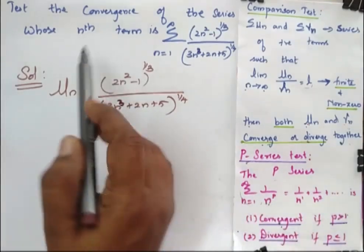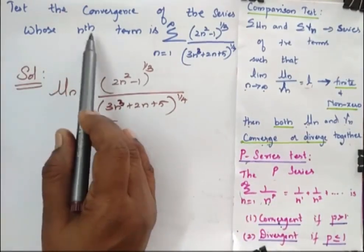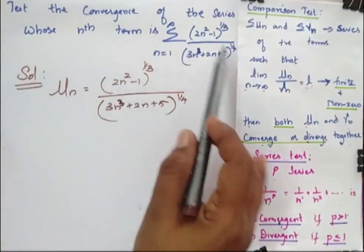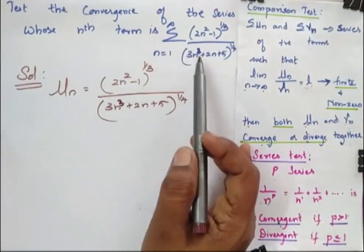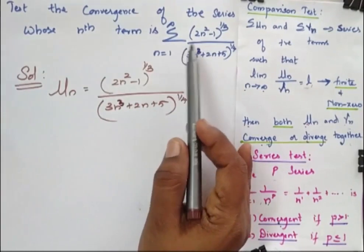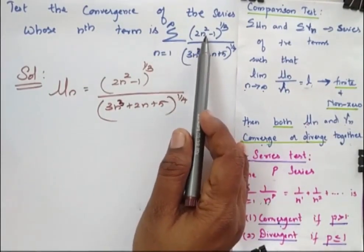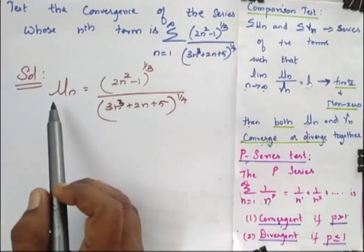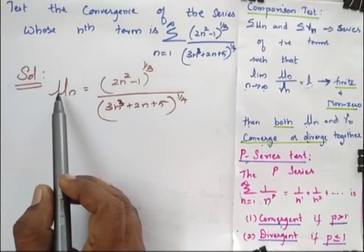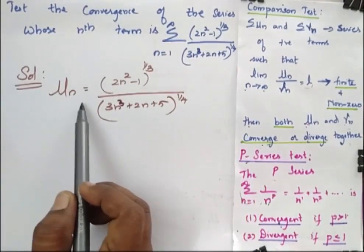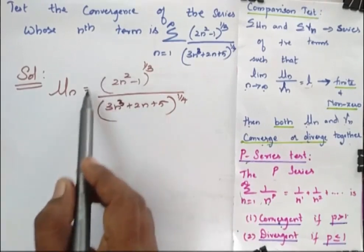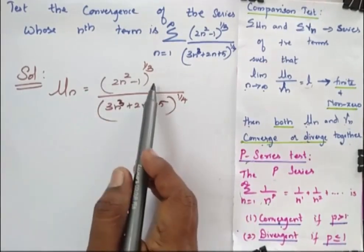Test the convergence of the series whose nth term is given. When I give the nth term, you can consider it as u_n. So now my u_n is equal to this series.